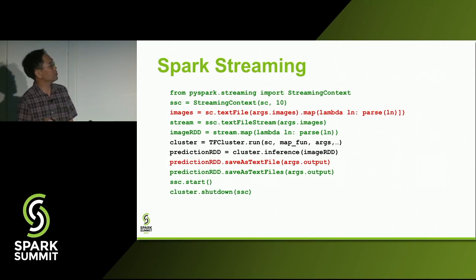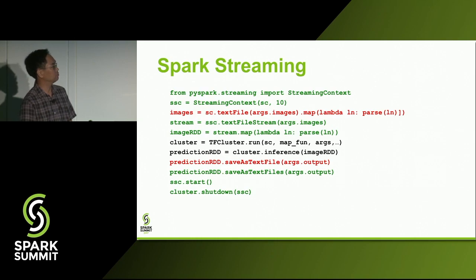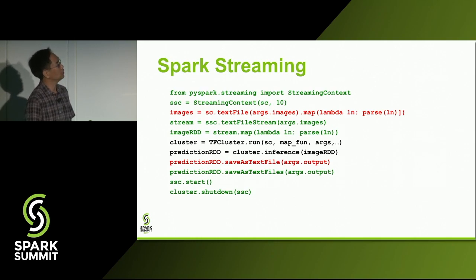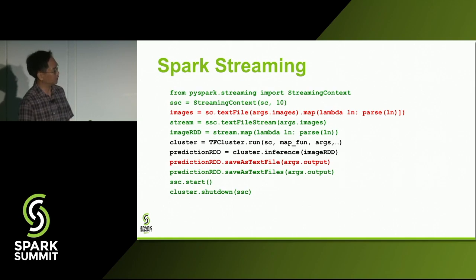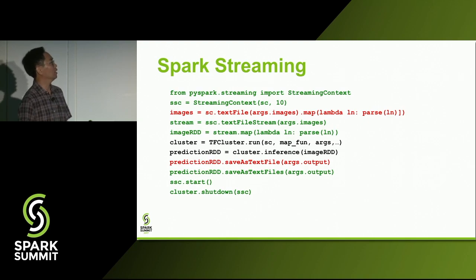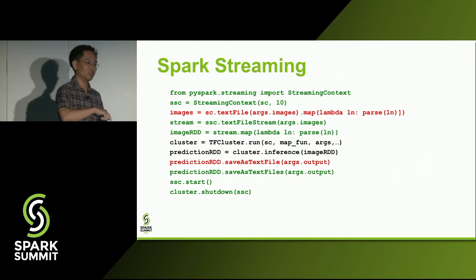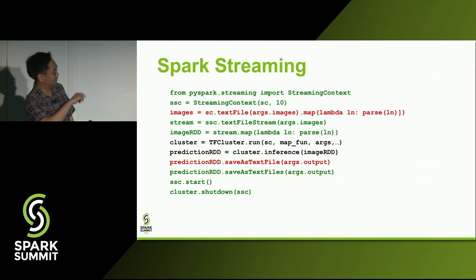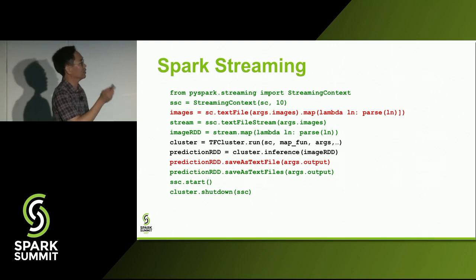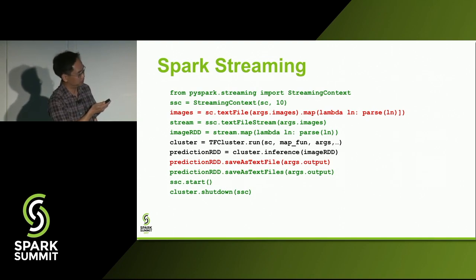For Spark Streaming, these are the lines of code changes required to go from a standard batch model to a streaming model. Most of it is boilerplate for importing streaming context, reading a stream instead of an RDD, or writing a stream versus an RDD — otherwise it's fairly simple.